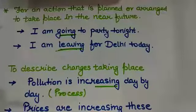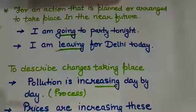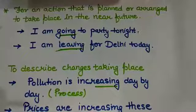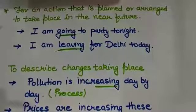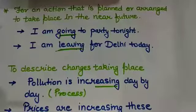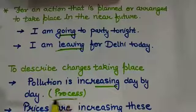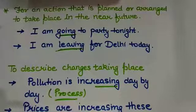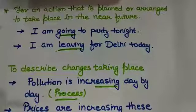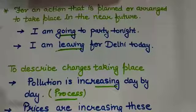Pollution is increasing day by day, suggesting that it is undergoing a process. Similarly, prices are increasing these days. Here again, this is a process which suggests the continuity of the work. So we use continuous tense to describe changes which are taking place at a progressive rate.